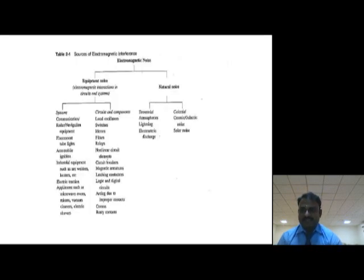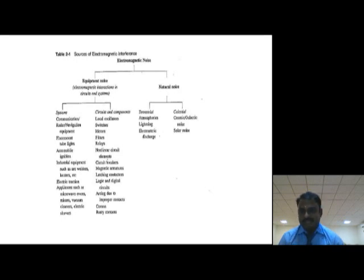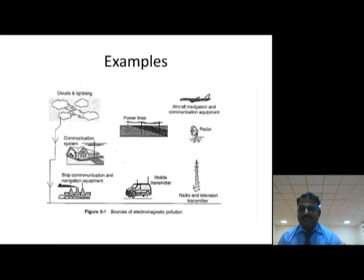Finally, we have a wide variety of sources of interference. We have different types of natural noises and man-made noises, with plenty of examples concerning systems and circuit components. Natural noises include terrestrial and celestial noises. There are also many examples of cases where we can feel interferences in day-to-day activities. Thank you.